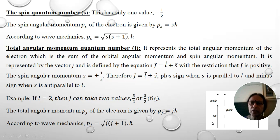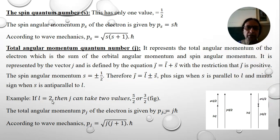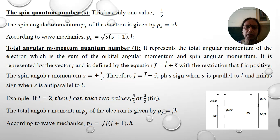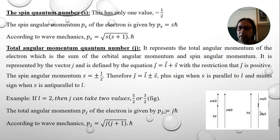For example, when L=2, j can take two values: 2 + 1/2 = 5/2 and 2 − 1/2 = 3/2. Diagrammatically, when L and s are parallel, j = 5/2; when L and s are anti-parallel, j = 3/2. The angular momentum is given by jℏ, and according to wave mechanics, √(j(j+1)) ℏ.